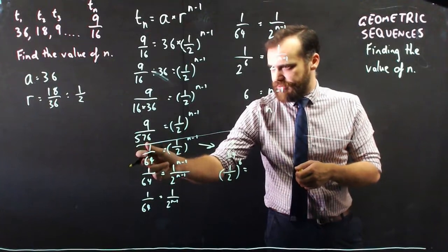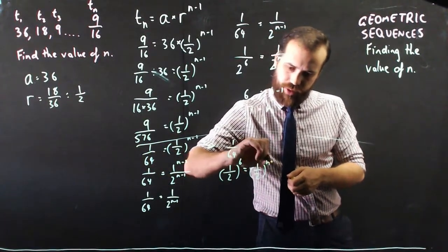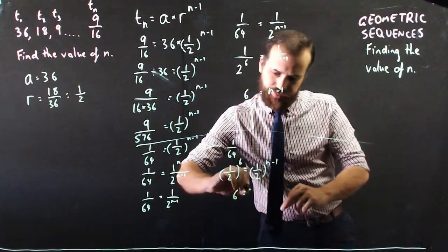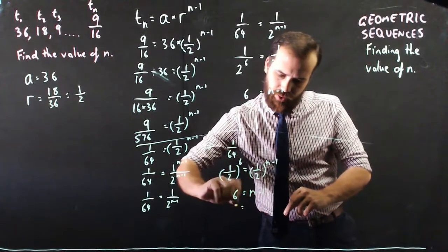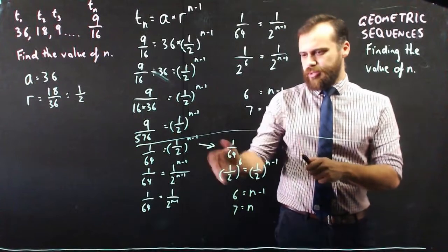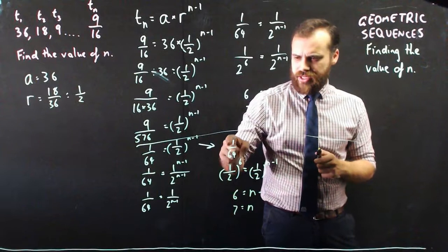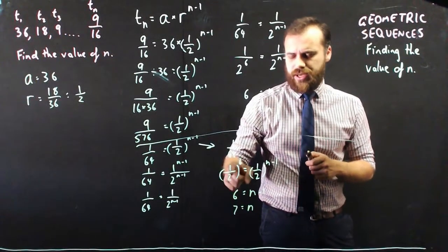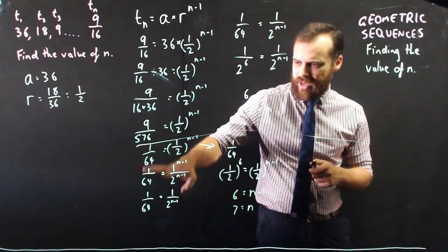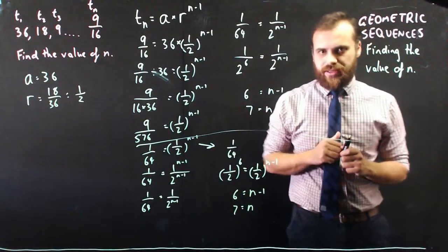So that means 1 over 2 to the power of 6 equals 1 over 2 to the power of n minus 1. And then that means 6 equals n minus 1, which means that n equals 7. So it probably cuts out a couple of lines, but I think in my mind, it's really hard to see that 1 over 64 is the same as 1 half to the power of 6. I feel like maybe this is slightly easier to deal with, but there's two methods to get that done.